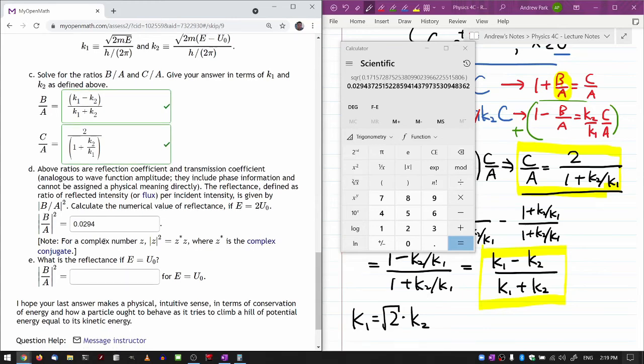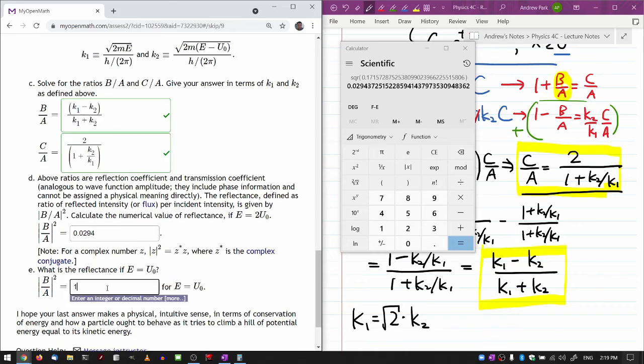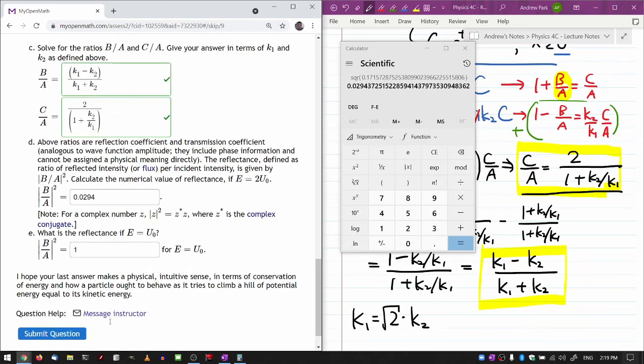And then what is the reflectance if E is equal to U0? Well, k1 would be infinitely greater than k2. k2 would be 0. So this expression reduces to k1 over k1, so 1. I hope that makes a physical intuitive sense.